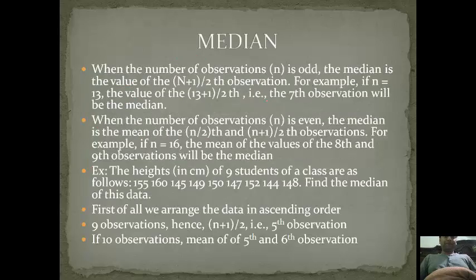Now coming to median. Median is when the number of observations (n) is odd. Like if there are 9 observations, or suppose the example is given of 13. Suppose if there are 13 observations, then the median will be (13+1)/2th number, that is 7th number. The 7th observation will be the median.